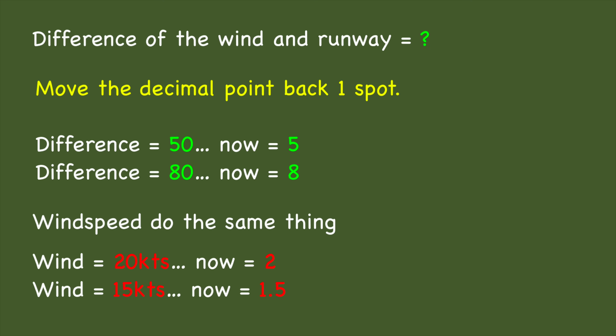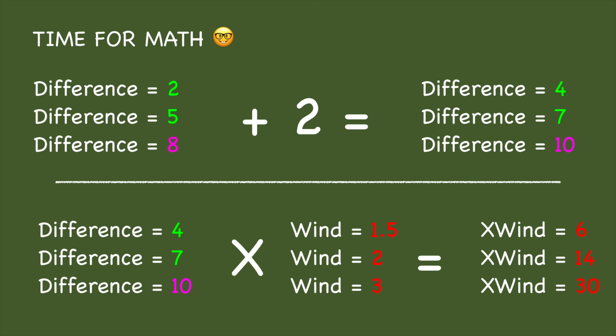I like to keep things really simple. We're going to drop the zero from the angle difference and the wind speed. If the difference is 50 degrees, make that 5. If it's 80 degrees, make that 8. The wind is 20 knots, make it 2. The wind is 50 knots, make it 1.5. Then, no matter what the difference is, take that root number — 2, 5, or 8 — and add 2 to it. So if the difference is 20 degrees, it becomes 2, plus 2 equals 4. If 50 degrees, it's 5 plus 2 equals 7. And 80 degrees is 8 plus 2 equals 10.